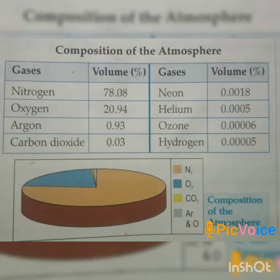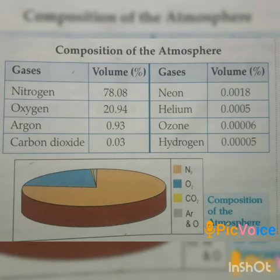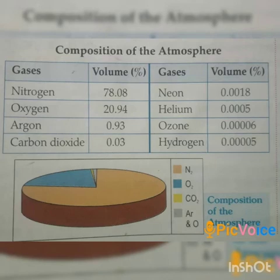Carbon dioxide is the heaviest gas of the atmosphere. It is a highly variable gas of the atmosphere because its concentration always varies with the level of pollution. Its concentration is about 0.03% in the atmosphere. Carbon dioxide is essential for the growth of plants because they prepare food with its help. Carbon dioxide keeps the atmosphere warm by absorbing the sun's rays. It is also used by plants to release oxygen, while human beings and animals release carbon dioxide and inhale oxygen to stay alive.